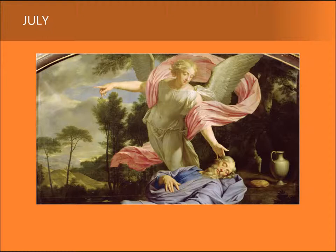As he sleeps, exhausted by his journey and ready to die, an angel appears to him twice. In this finely balanced composition, Philippe de Champaigne's classically inspired angel elegantly rises above Elijah, sprawled across the ground. Light that appears to fall from above highlights the angel's commanding gestures. The angel's arms extend out in several directions over Elijah's motionless figure. On our right, we note the bread and carafe of wine which rest beside Elijah's head.